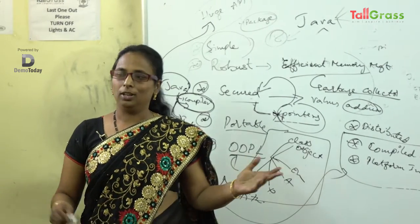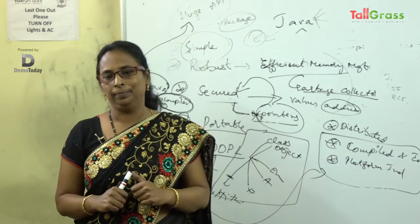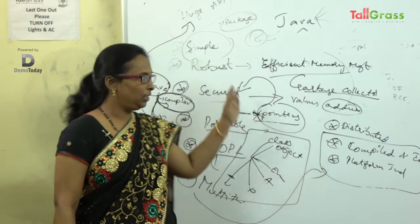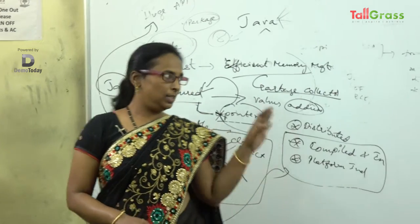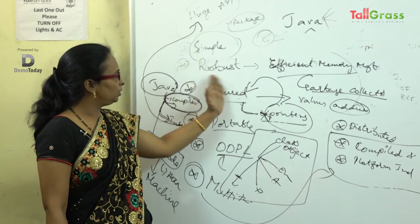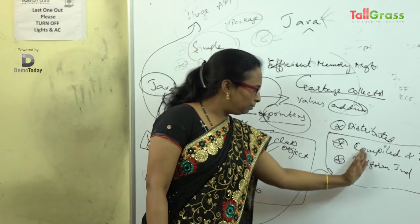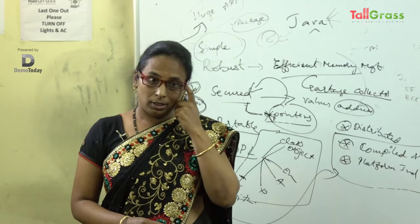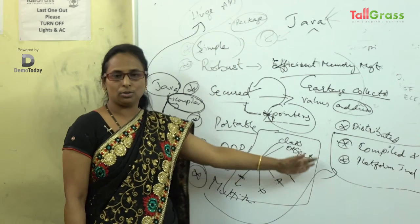You are learning Java not just because it is easy, but because it is platform independent and both compiled and interpreted. These features are included in almost all programming languages. So at the first level, you now understand the features of Java: simple, robust, secure, portable, object-oriented, multi-threaded, distributed, compiled and interpreted, and platform independent. Next, we will go deeper into what exactly object-oriented means.